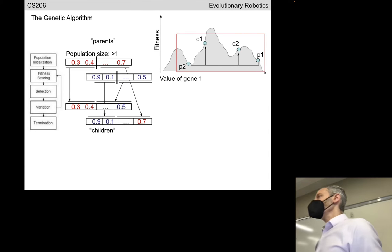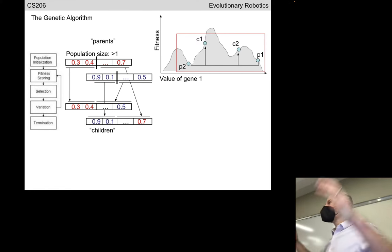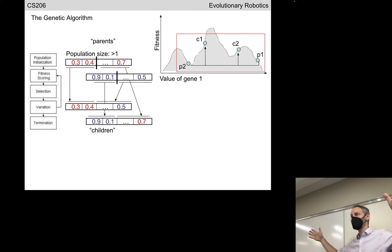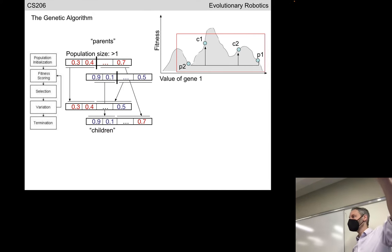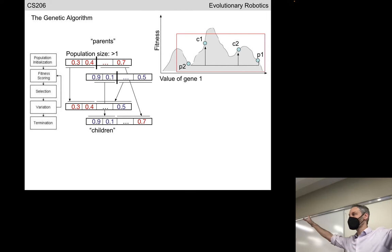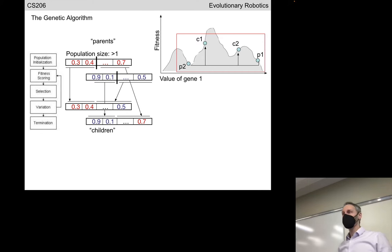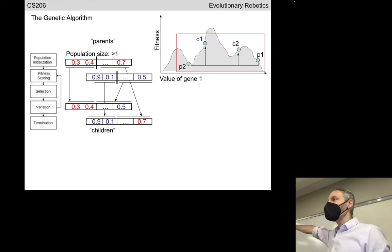We looked at the genetic algorithm, which introduces sexual recombination. Often one individual has almost solved part of the problem, and another individual has almost solved another part. If we splice those parents' genotypes in the right place and glue them together, we might be able to combine the best of both worlds into a child which is now nearer to the global optima.